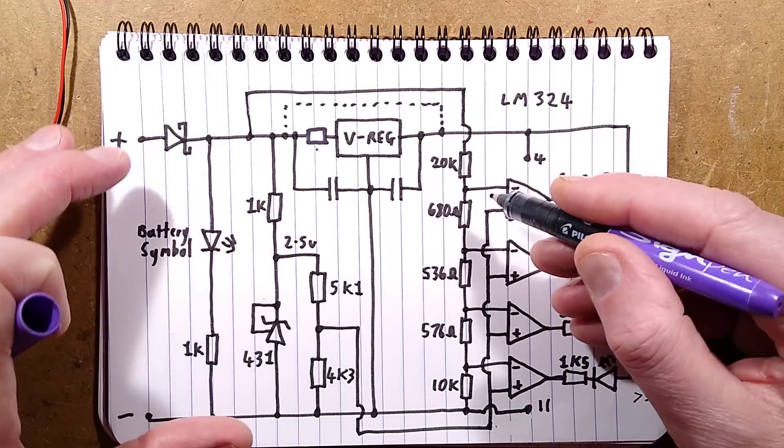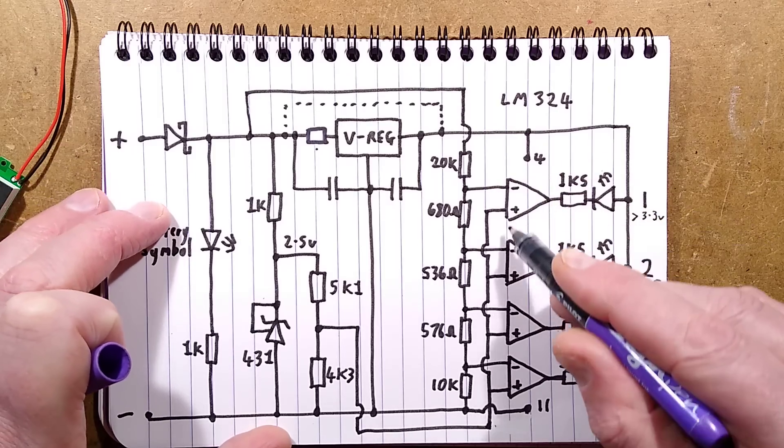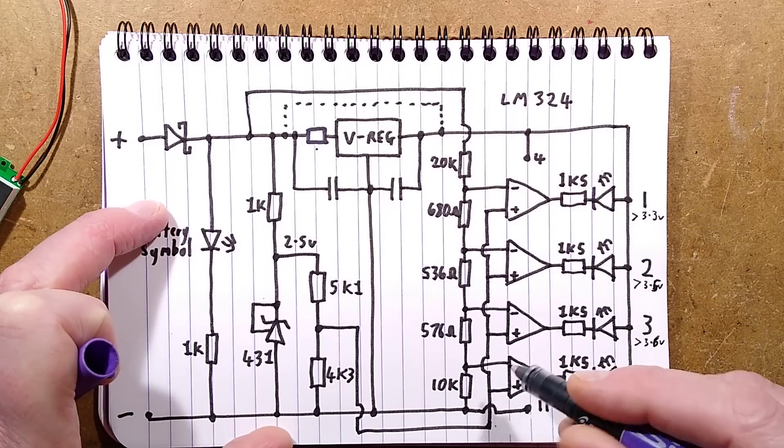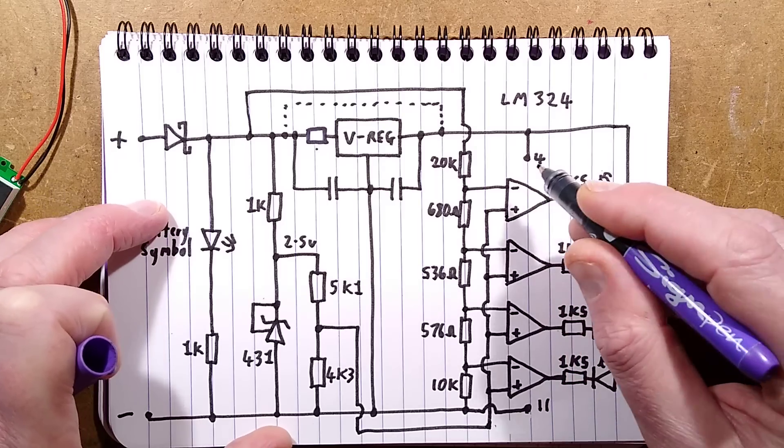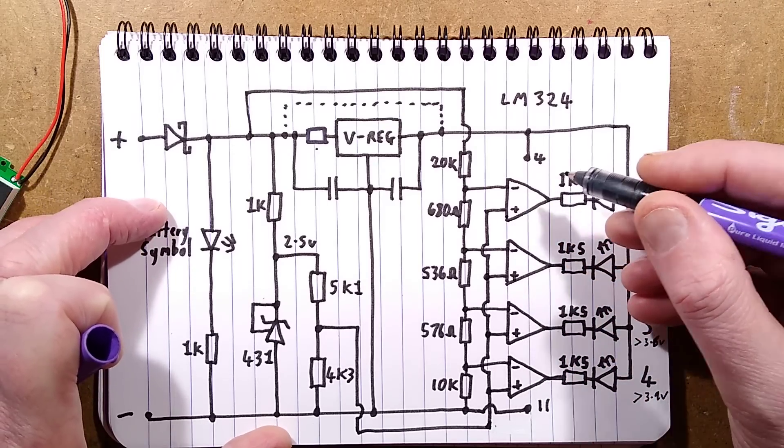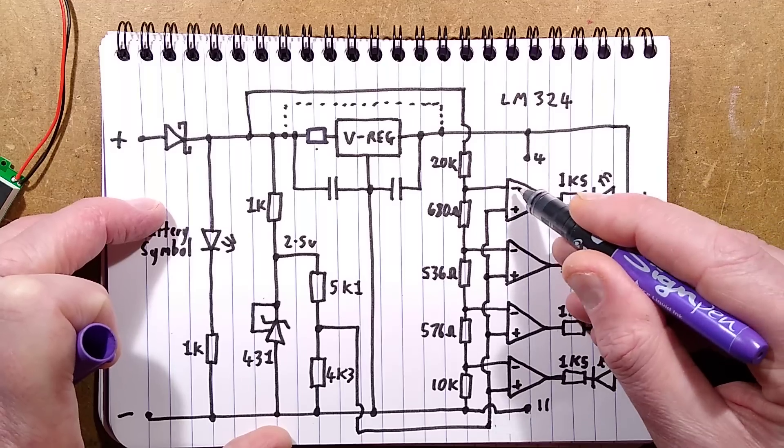They're set so that as the voltage on the input varies with reference to the reference voltage here, the purpose of the op amp or comparators could do this as well, but the op amp compares the voltage between the two inputs, the plus and minus.